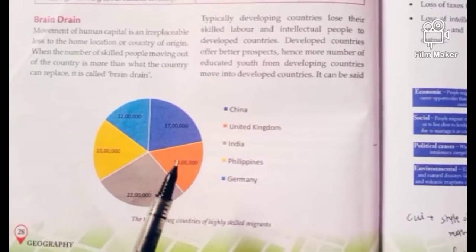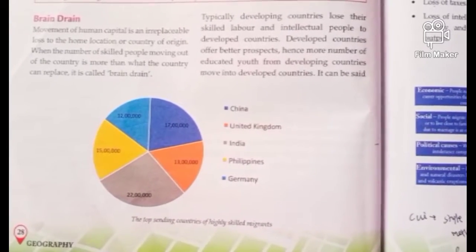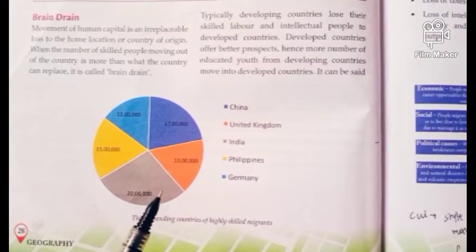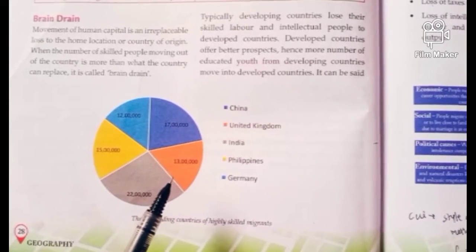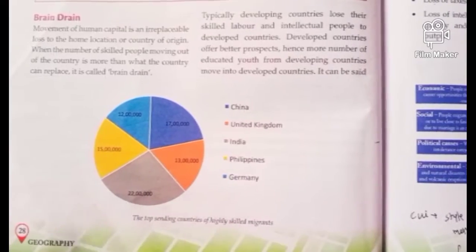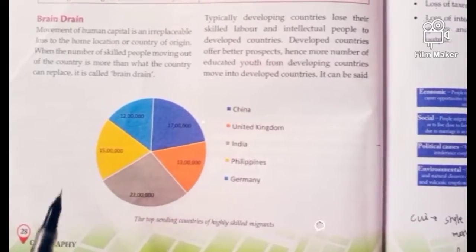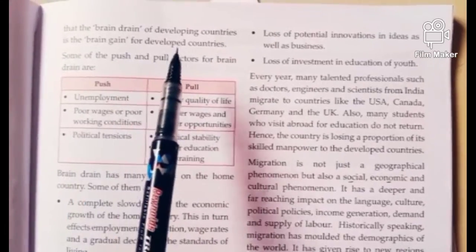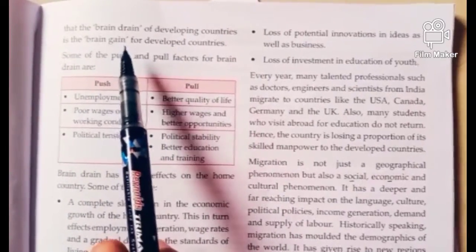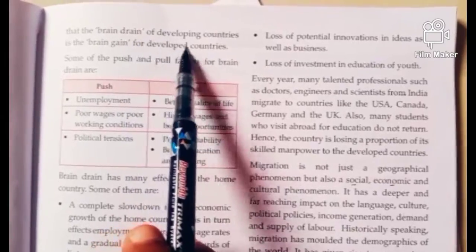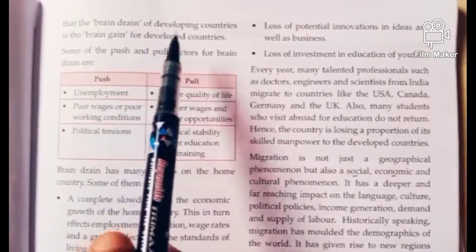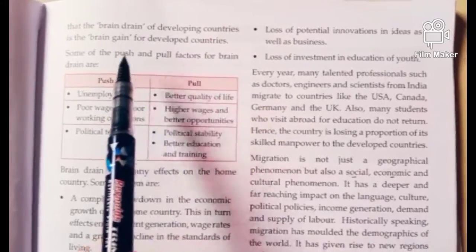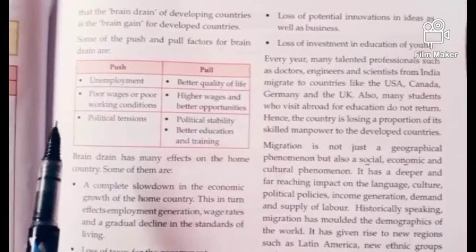In this pie chart, you can see how countries have their highly skilled migrants and the proportion each represents. For developing countries, it is a brain drain — a loss. On the other hand, it is a brain gain for developed countries, because they are receiving an influx of highly skilled labor, which is good for their further development.